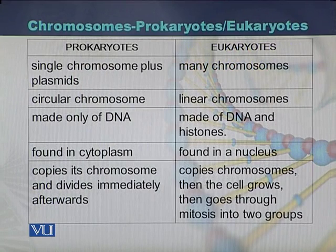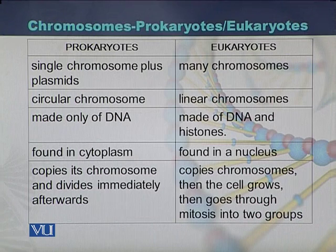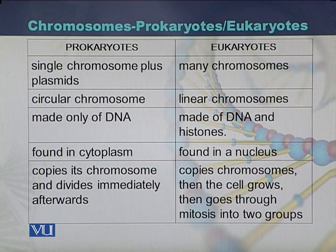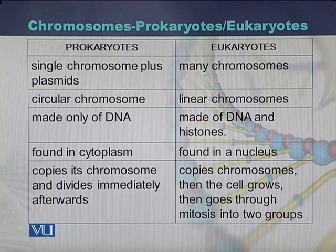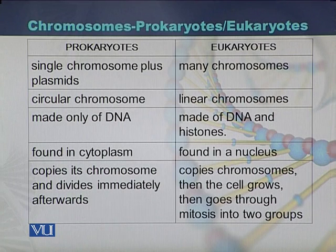During cell division, both sister chromatids separate from each other. Here is the comparison between chromosomes in prokaryotic and eukaryotic cells: prokaryotic cells have a single chromosome plus a plasmid, while eukaryotic cells have many chromosomes. Prokaryotic chromosomes are circular; eukaryotic chromosomes are linear. Prokaryotic chromosomes are made of only DNA, while eukaryotic chromosomes are made of DNA and histones. Prokaryotic chromosomes are present in the cytoplasm; eukaryotic chromosomes are found within the nucleus. Prokaryotic chromosomes copy and then divide immediately, while in eukaryotic cells the chromosome is copied, the cell grows, and ultimately divides into two daughter nuclei.